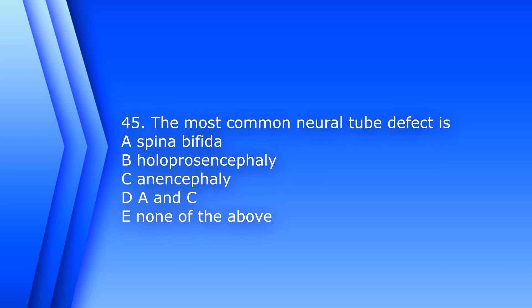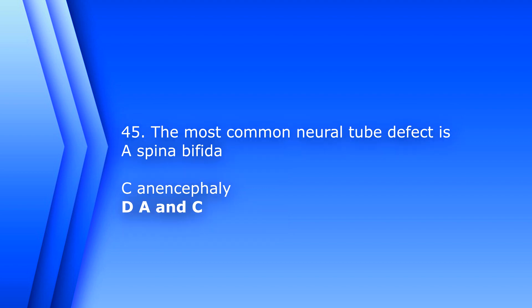Question 45: The most common neural tube defect is A) spina bifida, B) holoprosencephaly, C) anencephaly, D) A and C, or E) none of the above. The answer is D, A and C — spina bifida and anencephaly are the most common neural tube defects.